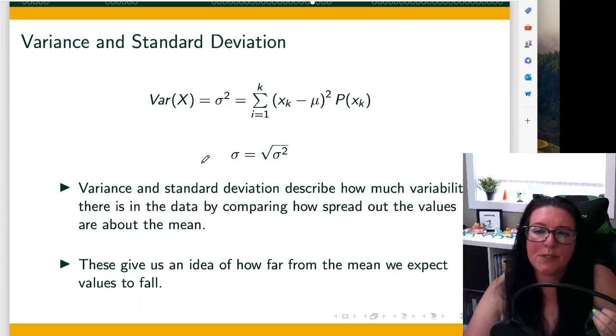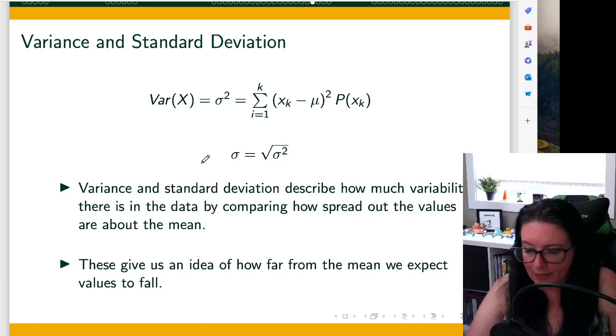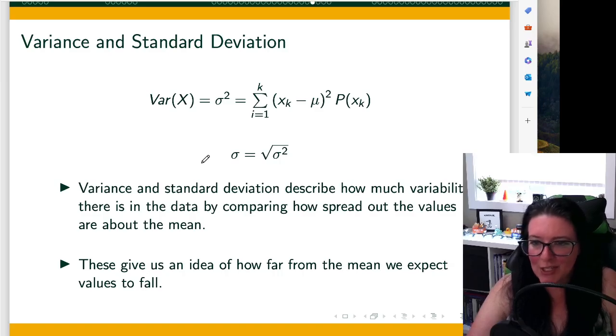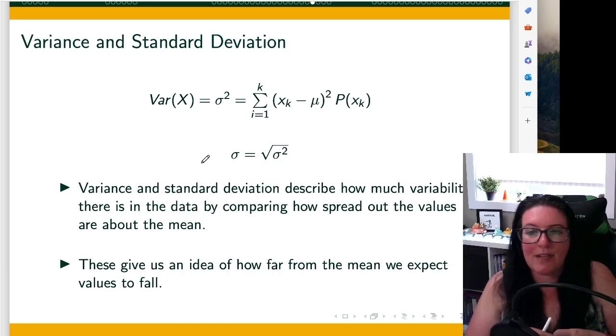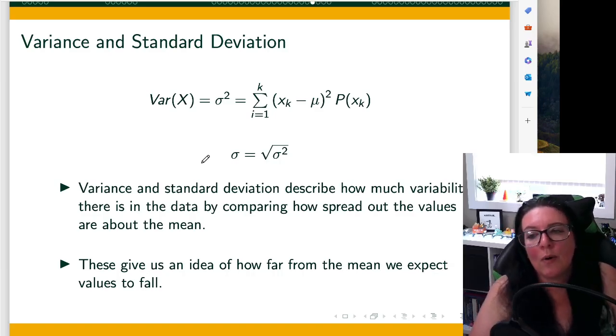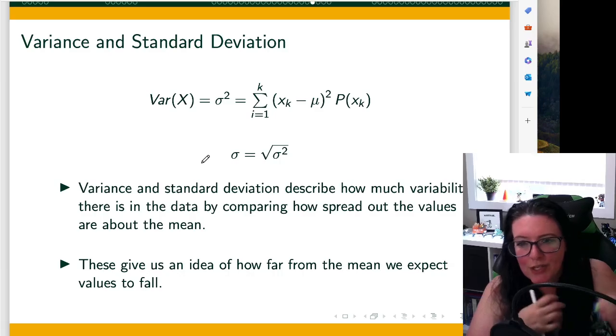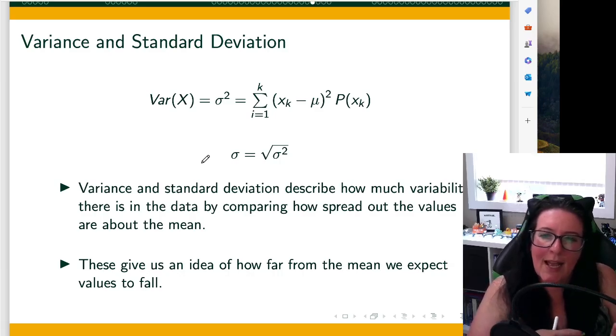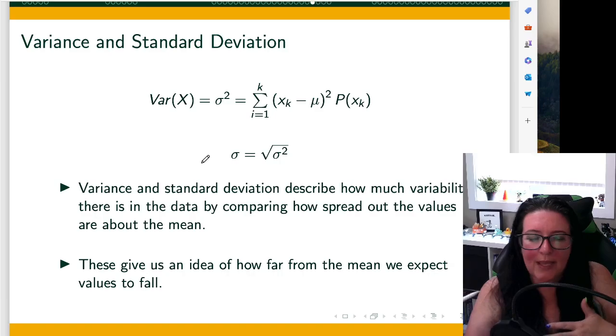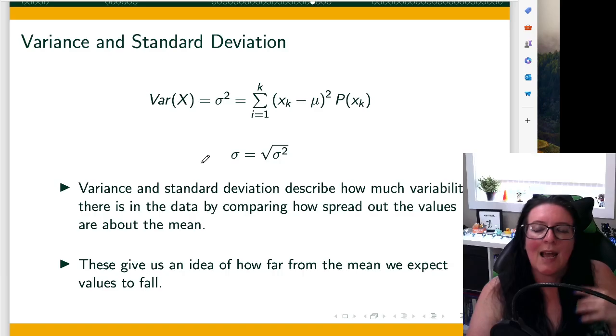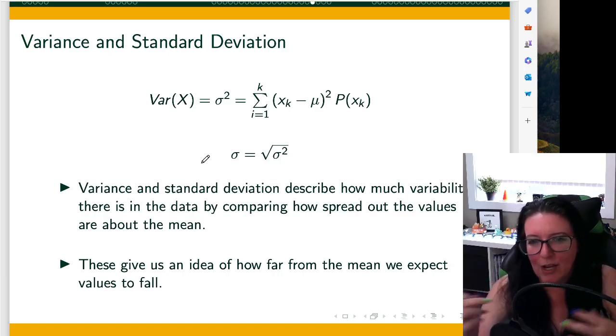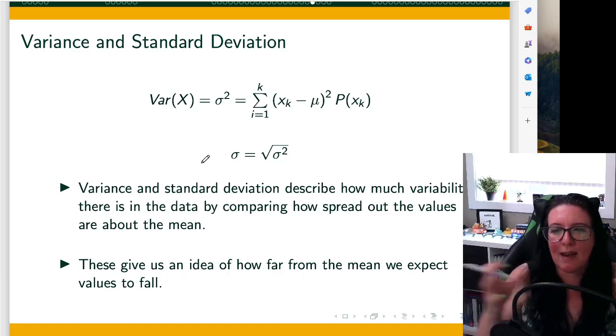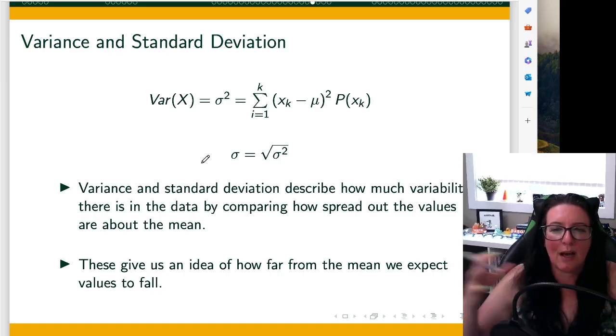So we would expect to see a total of seven when we roll the two die. Now, we want to also look at variance and standard deviation. Recall that standard deviation is just the square root of the variance. We talked about in previous videos how standard deviation is a bit easier to understand. Variance, though, is more mathematically tractable. We use it in other formulas. And if you find one, you find the other.